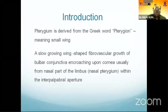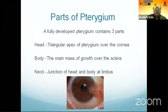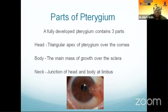As you all know, pterygium is derived from the Greek word meaning 'small wings.' It is a slow-growing, wing-shaped fibrovascular growth of bulbar conjunctiva encroaching upon the cornea, usually from the nasal part of the limbus within the interpalpebral aperture. The fully developed pterygium contains three parts: the head (the triangular apex over the cornea), the body (the main mass of the growth over the sclera), and the neck (the junction of head and body at the limbus).